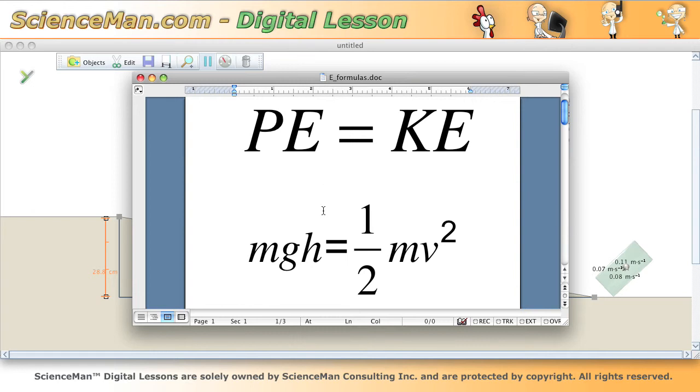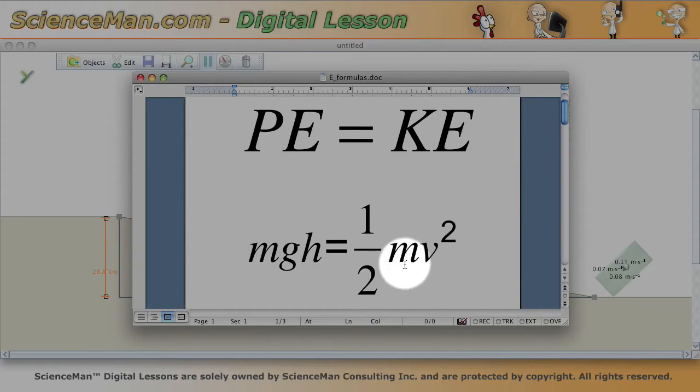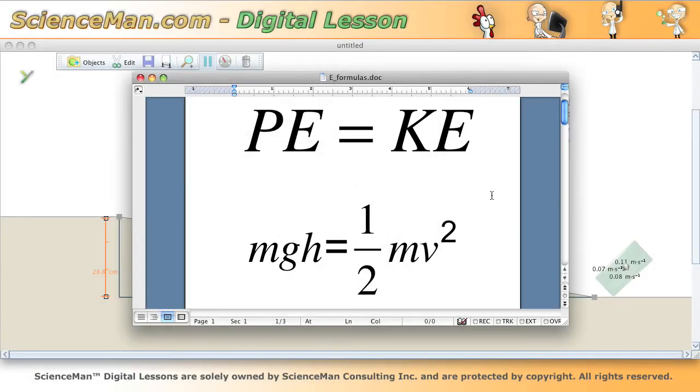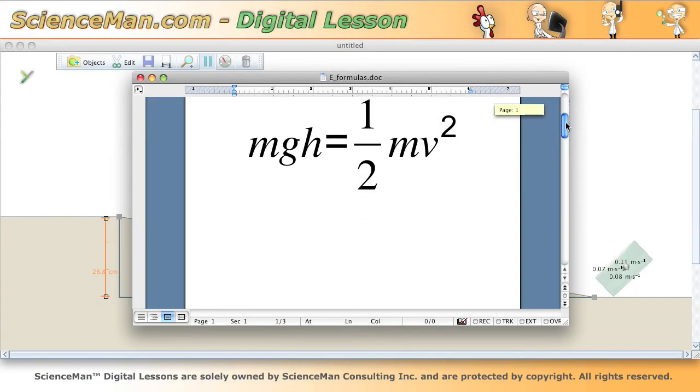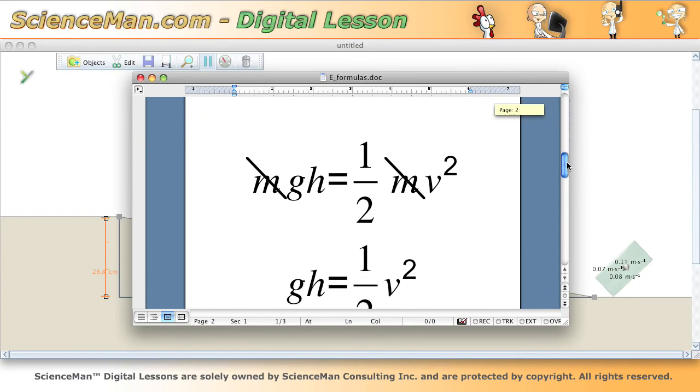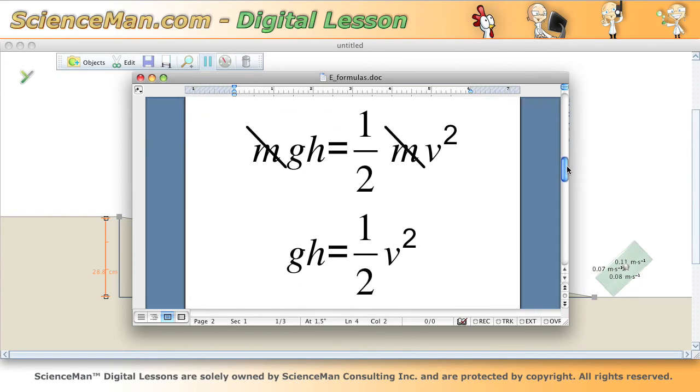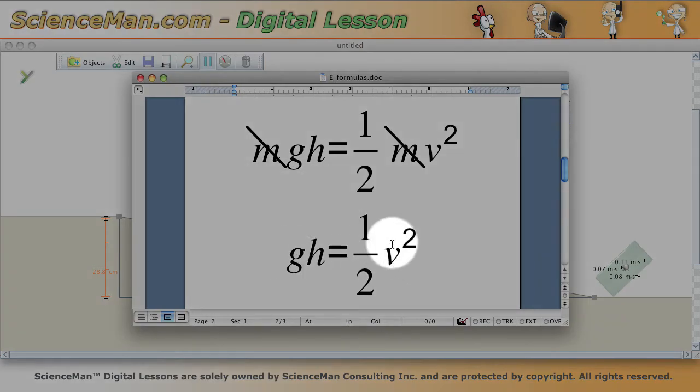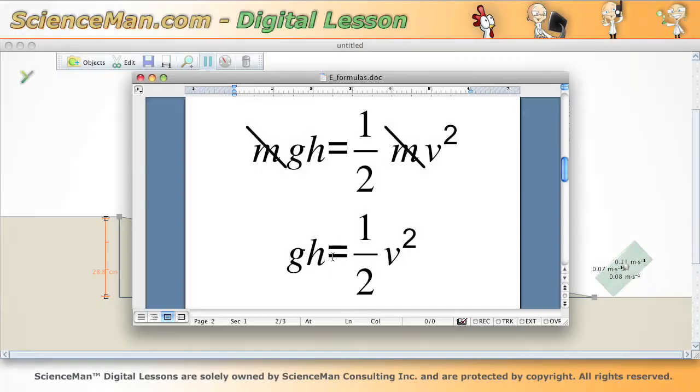Now if you look really closely on both sides of this equation you'll see m and m. If we do a little bit of algebra here we can cross off those m's because they're on both sides of the equation, so we're left with a smaller equation to represent the conversion of potential to kinetic energy.